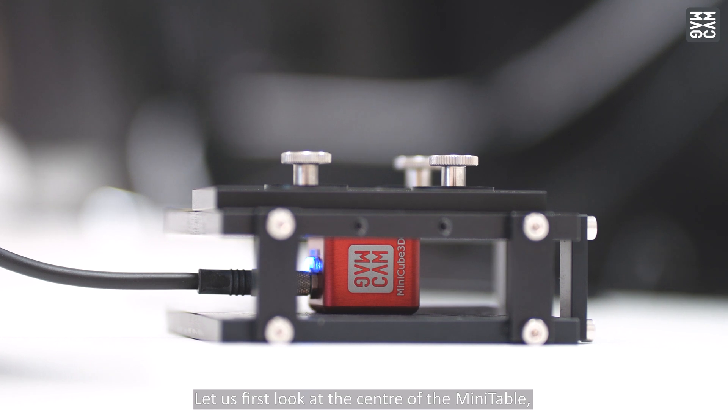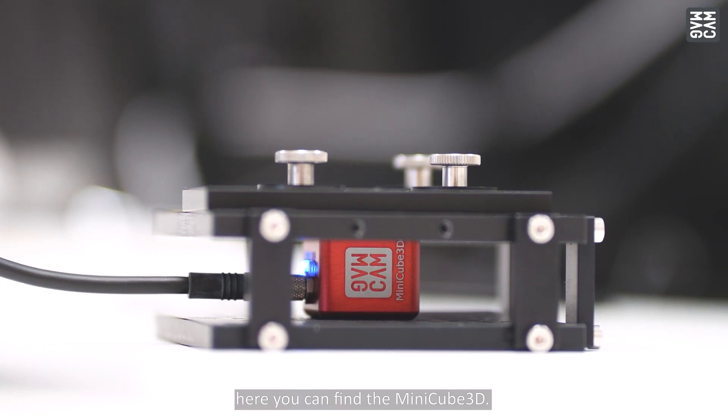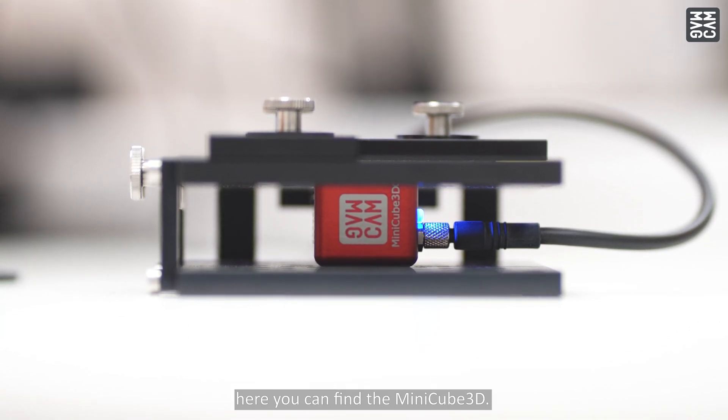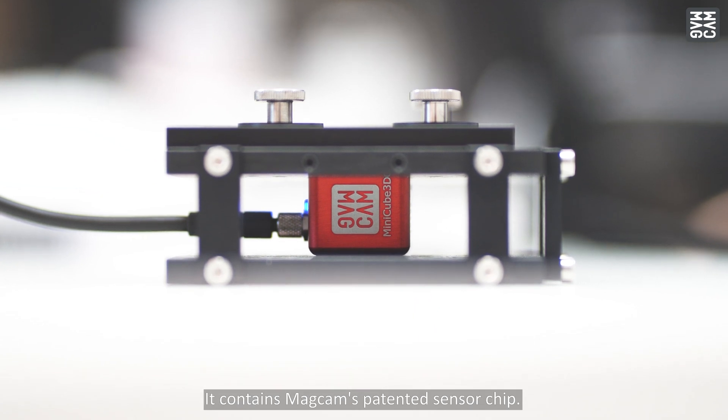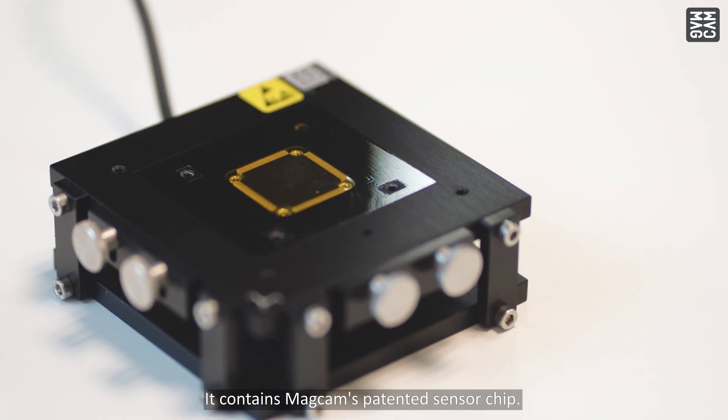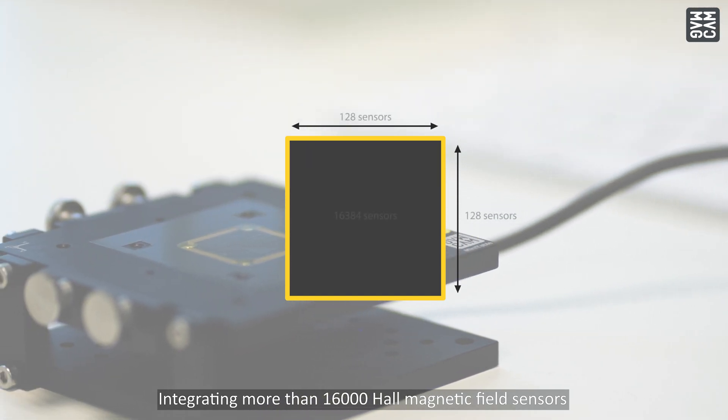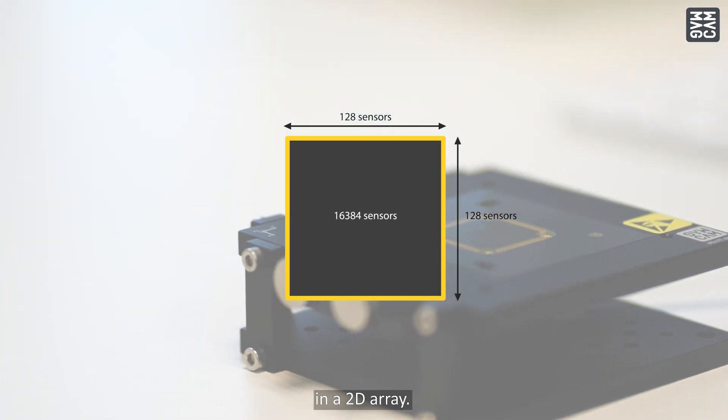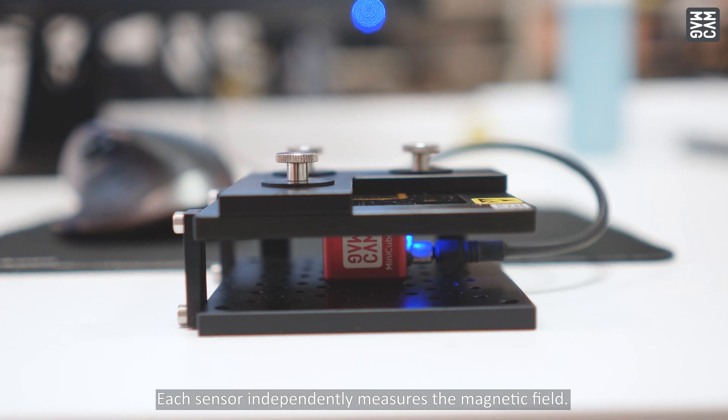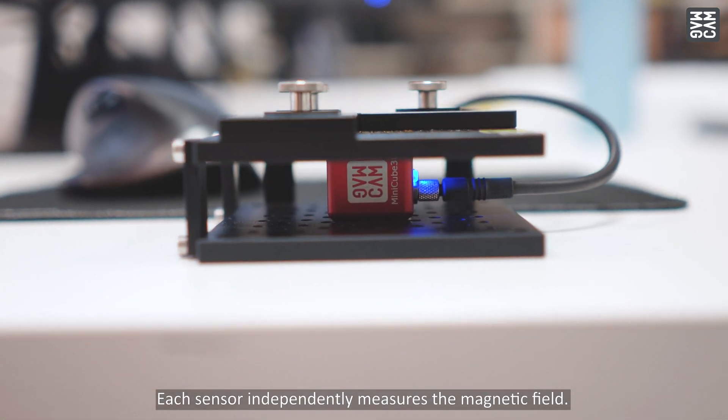Let us first look at the center of the mini table. Here you can find the miniCube 3D. It contains MagCam's patented sensor chip integrating more than 16,000 hall magnetic field sensors in a 2D array. Each sensor independently measures the magnetic field.